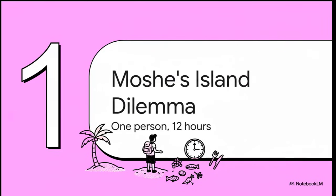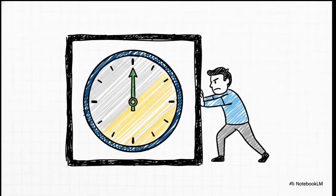Let's put a face to this problem. Meet Moshe. He's our survivor. He's all alone and he is facing this exact dilemma. He needs to eat. But time? Well, time is ticking. This is his reality. Here's the number one rule of this game — the biggest constraint: the clock.